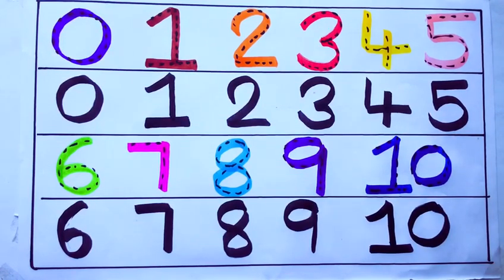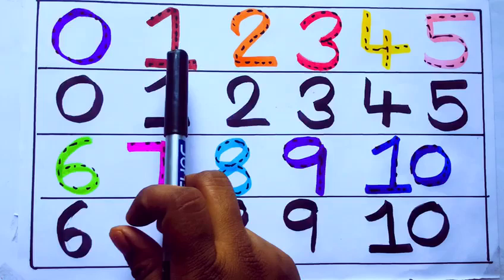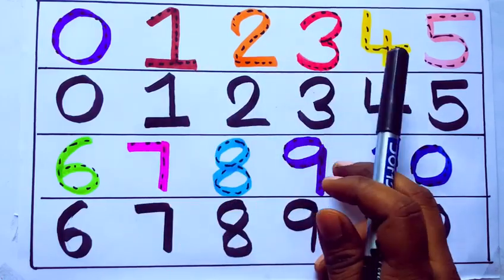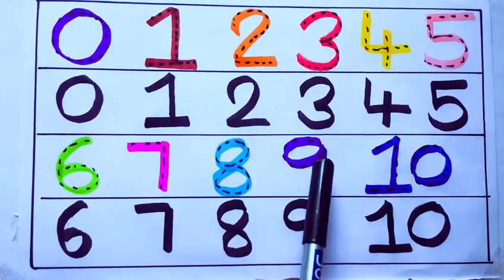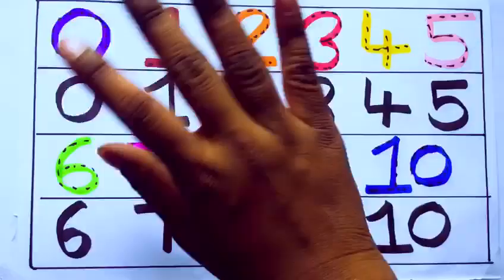Let's review the numbers: 0, 1, 2, 3, 4, 5, 6, 7, 8, 9, 10. Bye kids!